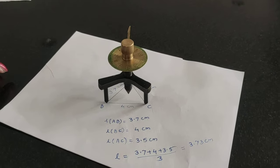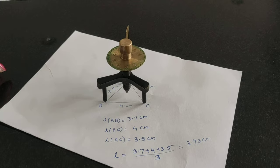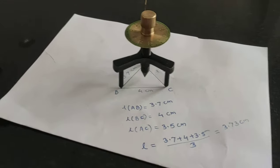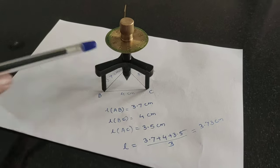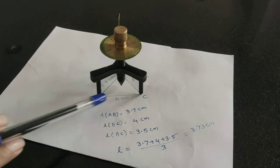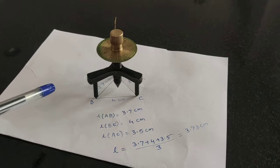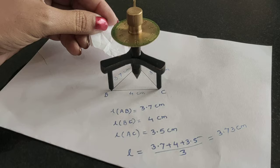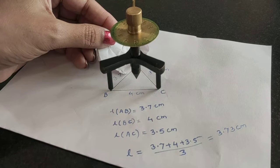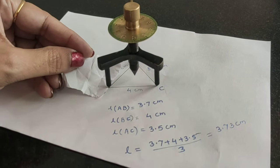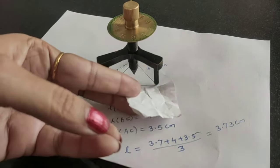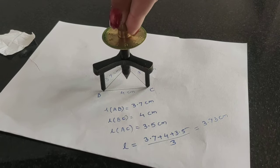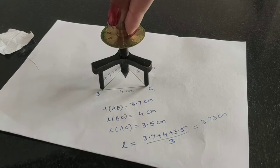You have to take a plain paper and keep the spherometer on it as shown. You will find that all three legs should be in contact with the paper. Using a piece of paper you can check - if the paper is not going through, that means it is in contact. In this way you can check it.